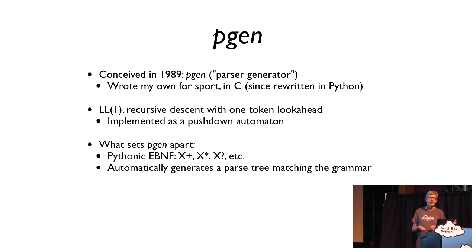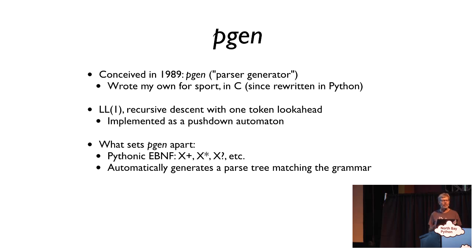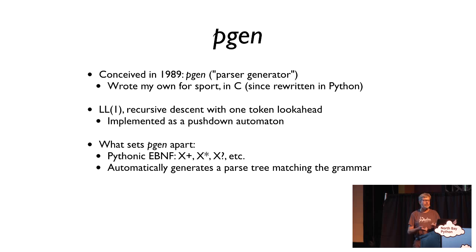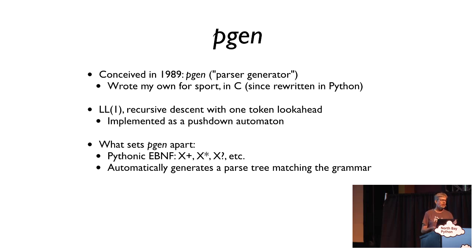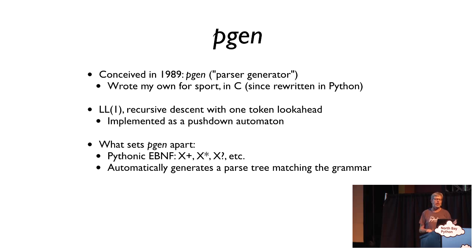Parser generators are a dime a dozen — even in the early 70s, a parser generator named Yacc was created and was already called "yet another compiler compiler." They're fun to write, which is why in 1989 the first thing I did when I thought I'd implement my own language was build my own parser generator. I originally wrote it in C, then in 2004 rewrote it in Python, which eventually made it into the standard library. But now the original pgen is completely dead, and I feel it's essentially a dead end.